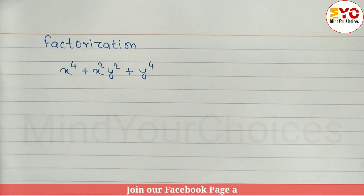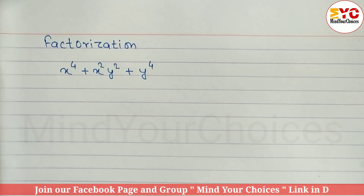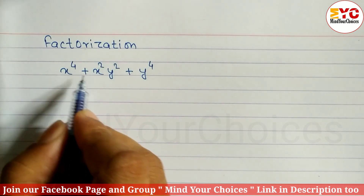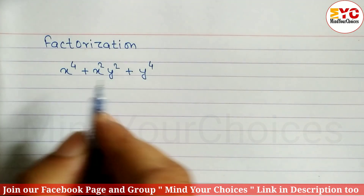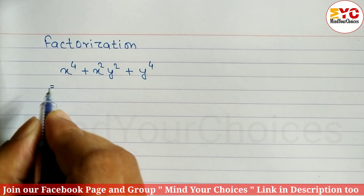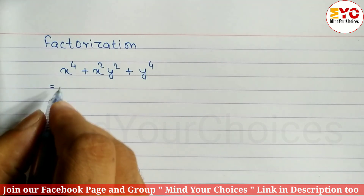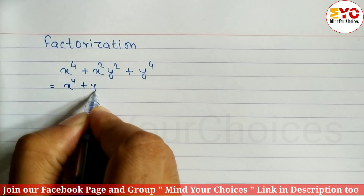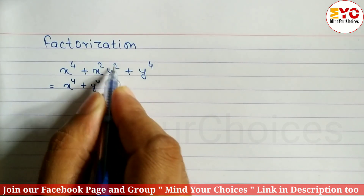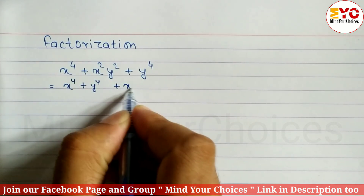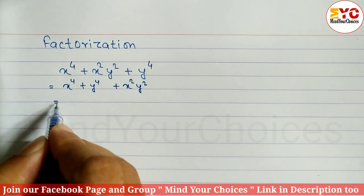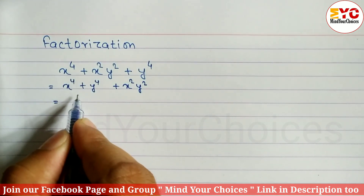This question is taken from class 9 factorization, which is important for class 10 too. We have x⁴ + x²y² + y⁴. In this type of question, we take the first and last terms — x⁴ + y⁴ — and write x²y² at the end.